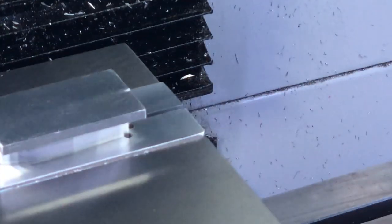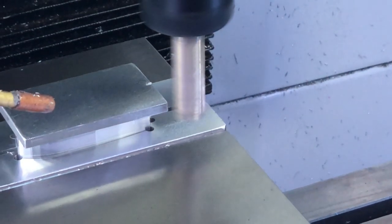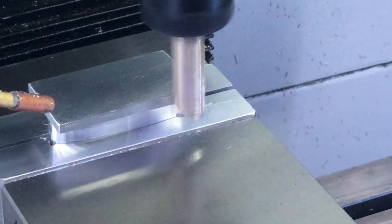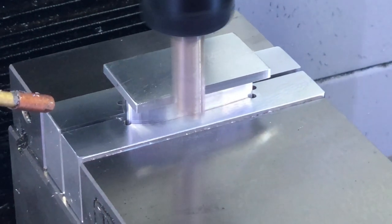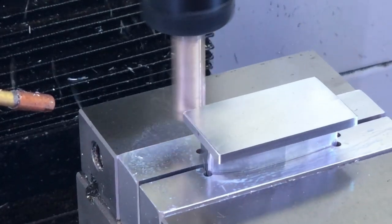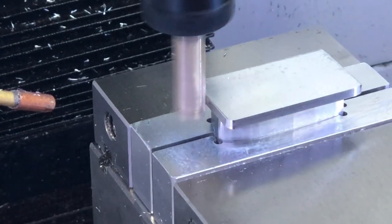On to operation number two, removing the top cap and bringing the part to final size. I did this fixture offline. I figured by now that you've gotten the gist of what it takes to make a fixture.